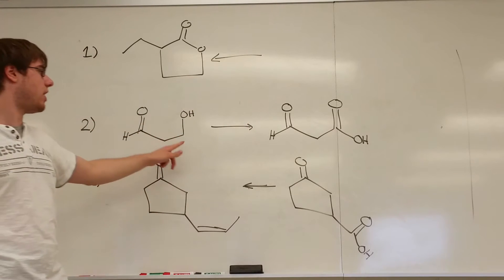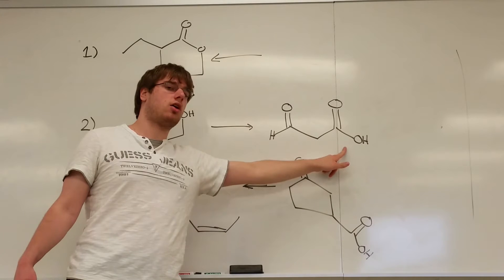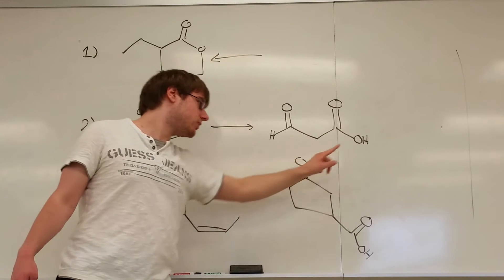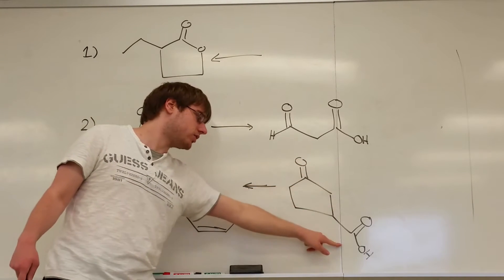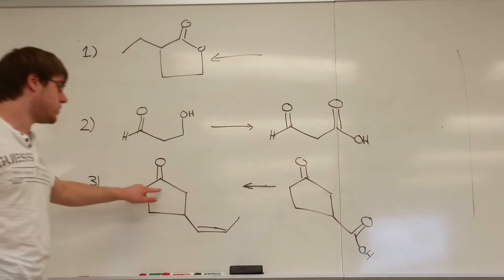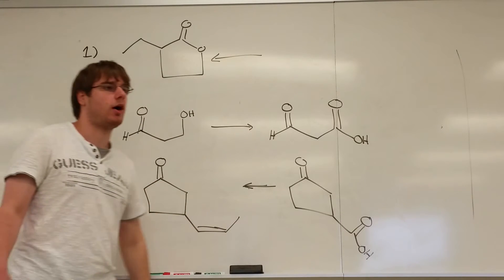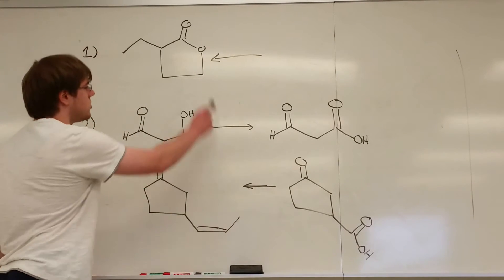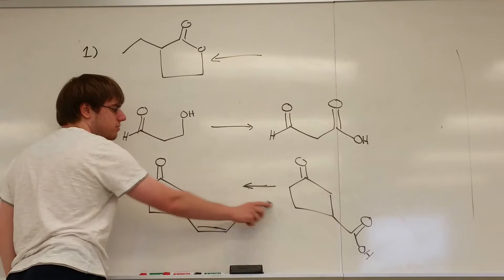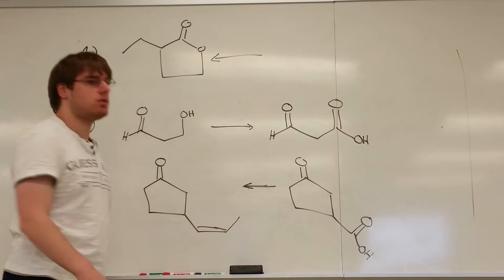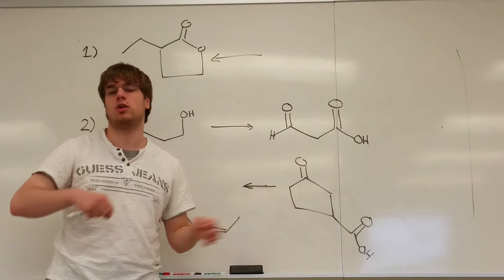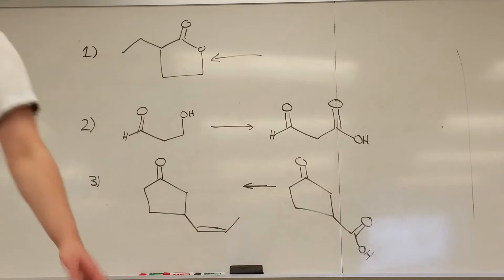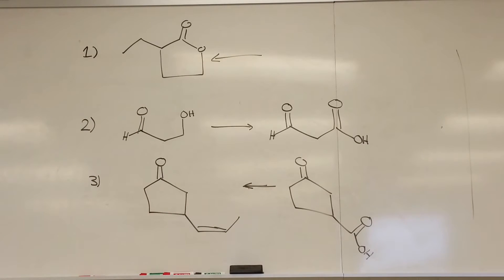This aldehyde and alcohol through to an aldehyde and a carboxylic acid, and this structure that has a ketone and a carboxylic acid into a ketone and a carbon-carbon double bond. Pay attention to the direction of the arrows because I've intentionally flipped and flopped them to make sure you are aware of where your reactants and products should be going. Go ahead and pause the video if you want to give those a try, otherwise let's get started with number one.